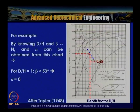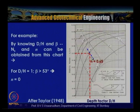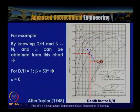When d/h is involved with beta less than 53 degrees, the chart must be adopted — in that case there is a possibility that the failure surface passes below the base (base failure). For depth factor d/h equal to 1 and beta greater than 53 degrees, n equals 0, indicating that the failure surface passes through the toe of the slope. Here n times h is the distance from the toe, h is the height, and d is the total height.